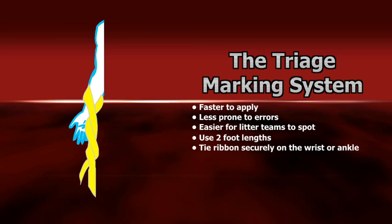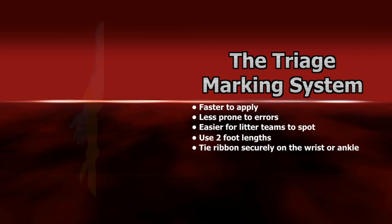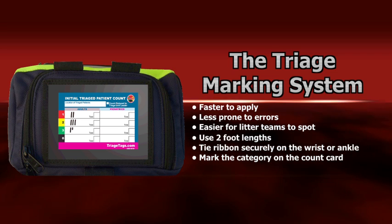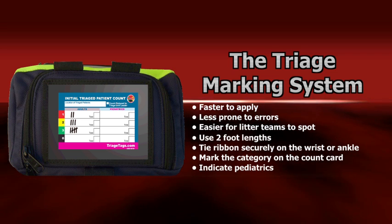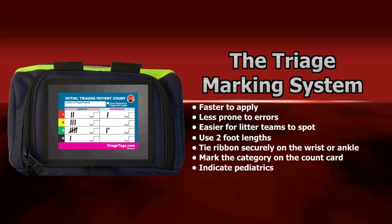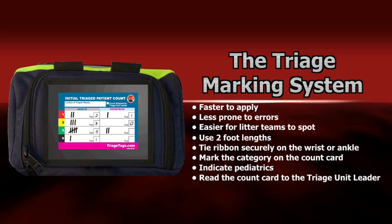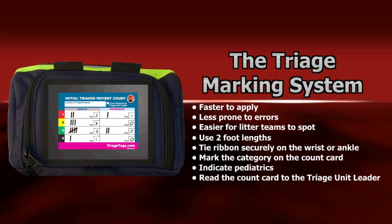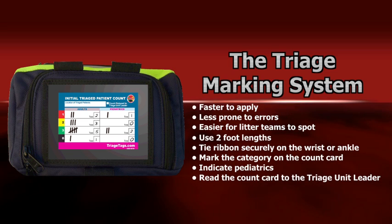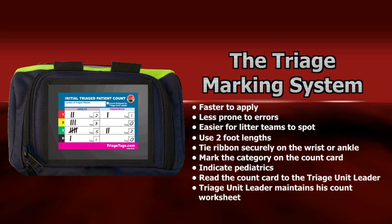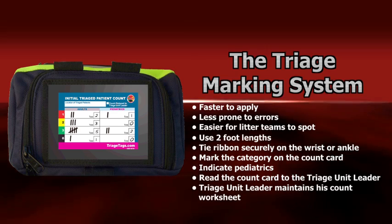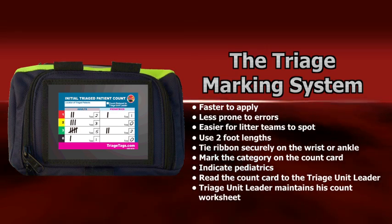After securing the ribbon to the patient, utilize the count card on the ribbon dispenser to indicate the acuity category and whether the patient was an adult or pediatric. When a triage member's assignment is complete, the count card is read back to the triage unit leader to provide an accurate tally of patients by acuity. Total count information will be provided to the IC and MedCom through the chain of command. The triage unit leader will maintain a tally worksheet for accountability and post-incident documentation.